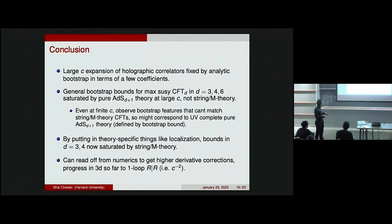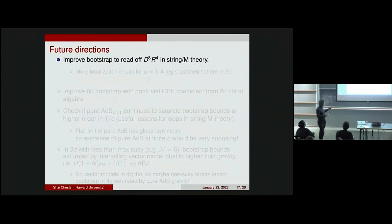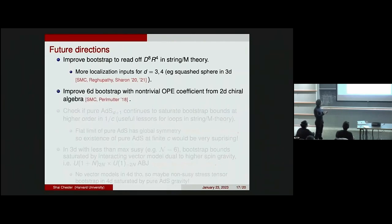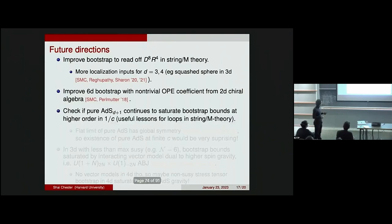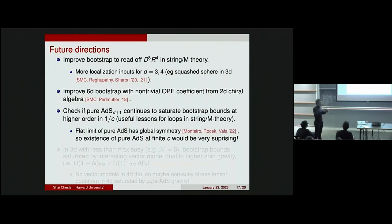In the future, we'd like to get precise enough numerics to read off from these curves for N=4 super Yang-Mills or ABJM the higher derivative corrections, thereby defining the S-matrix to all orders and thus defining quantum gravity properly to all orders, not just protected terms. The first future direction is to get these unprotected terms like D^4R^4 perhaps using new localization constraints. In 6D there's no localization, but in a paper with Eric we showed there's something analogous to localization allowing you to compute a non-trivial OPE coefficient, which may allow us to zero in on the (2,0) theory. It would also be nice to compute higher loop terms in the pure ADS theory to see if it continues saturating the bound for a bigger regime.